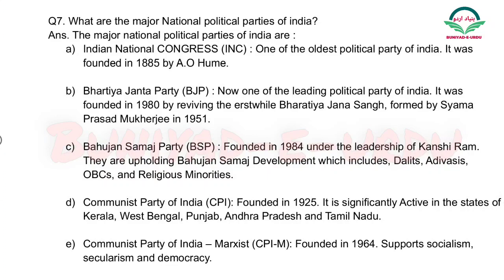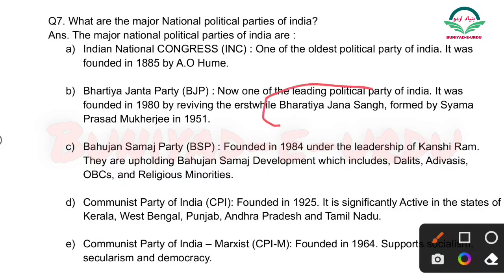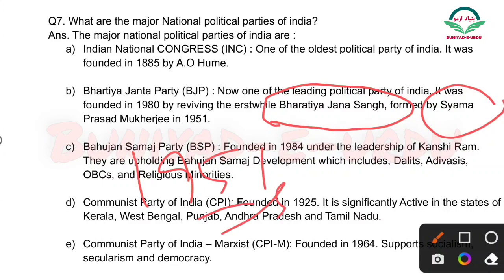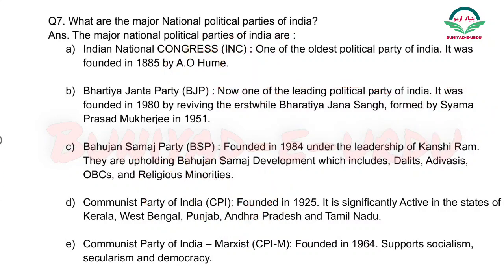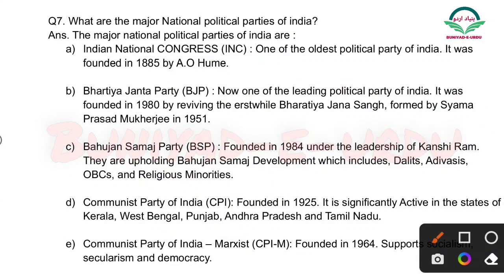Next: Bharatiya Janata Party (BJP) — BJP ka purana naam tha Bharatiya Jana Sangh, jo Shyama Prasad Mukherjee ne 1951 mein found kiya tha. 1980 mein iska naam BJP — Bharatiya Janata Party — rakh diya gaya.